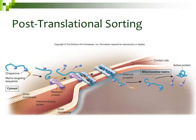Post-translational sorting happens after the polypeptide has already been translated or created. The polypeptide is already created and has a little targeting sequence or signal tag on it. That tag matches up with a receptor on, for example, a mitochondria. If the tag matches the receptor, that protein is brought into the mitochondria. So post-translational sorting happens after the protein is already created, and then it goes to the nucleus, the mitochondria, or the chloroplast.